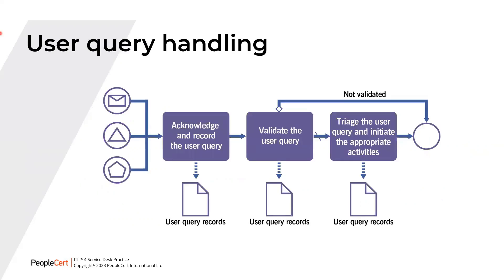The user query handling is the first process. In the service desk practice guide, you will find pictures and all the information shown on these slides. It ensures that user queries are captured, validated, and triaged for further processing. There are three activities shown in sequence: acknowledging and recording the user query, validating the user query, and then triaging the user query and initiating the appropriate activities. If the query is not validated, the service will not be provided.